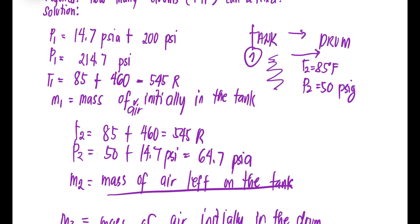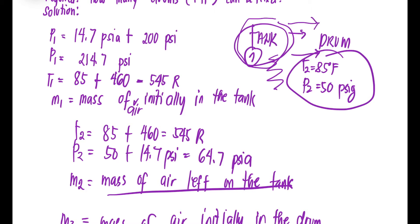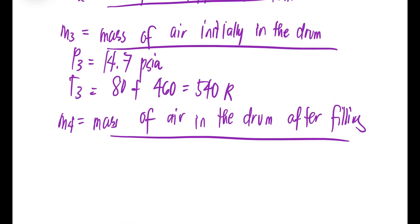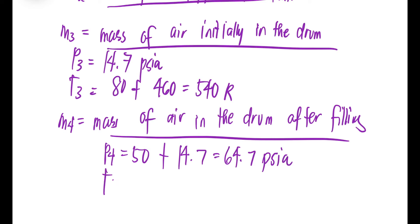So, the tank has air that we transfer to the drums. We have transfer conditions as well as the initial conditions of the drum, and after that is m4 — the air in the drum after filling. The drums can be filled to 50 psi gauge, so pressure 4 is 50 psi gauge. We need to add atmospheric pressure: 14.7, giving 64.7 psia. The temperature at that point is also given as 80 degrees Fahrenheit.